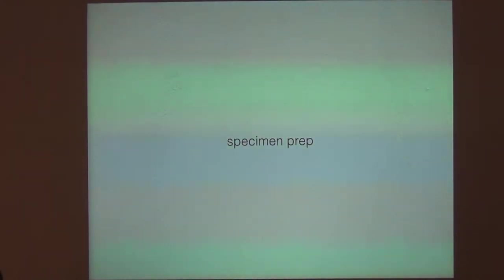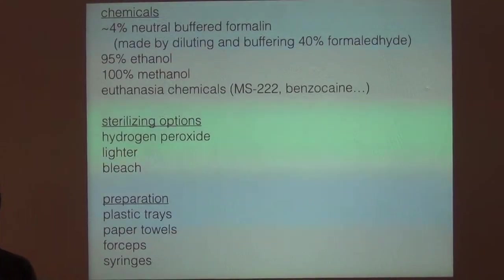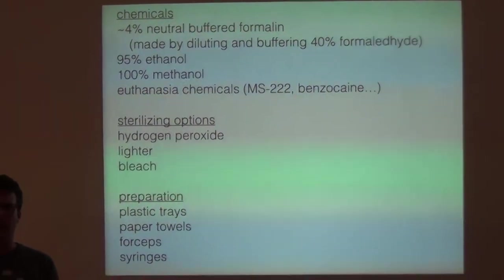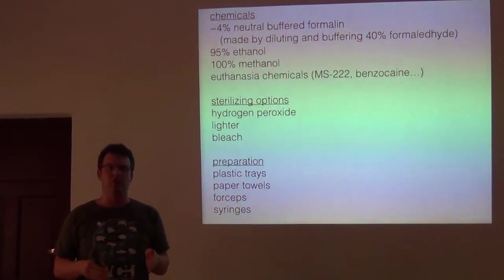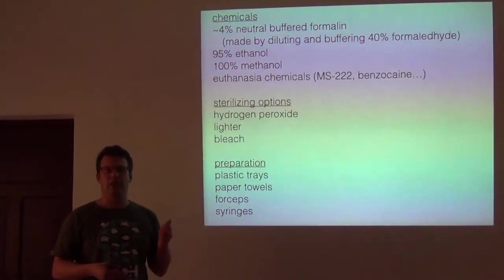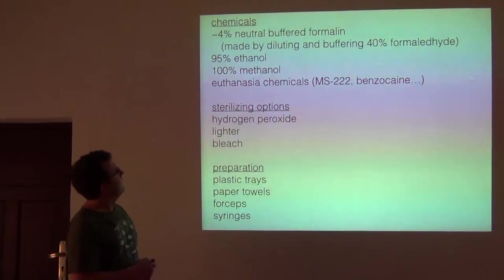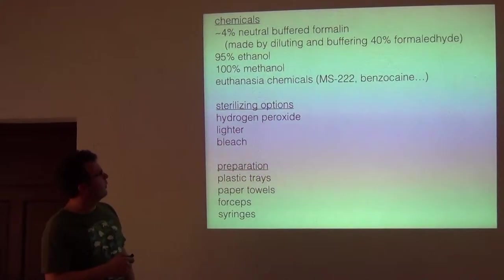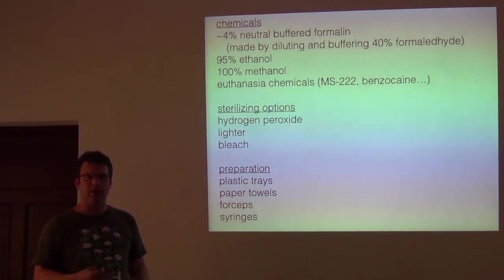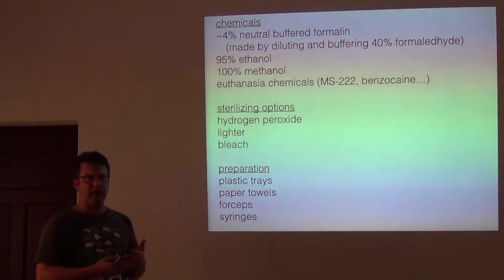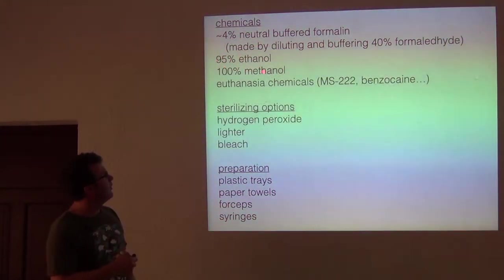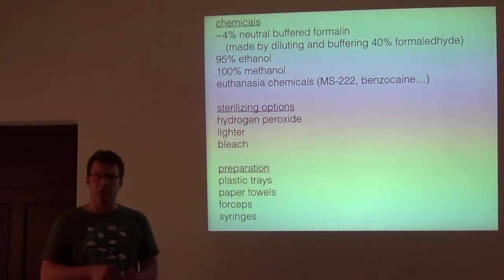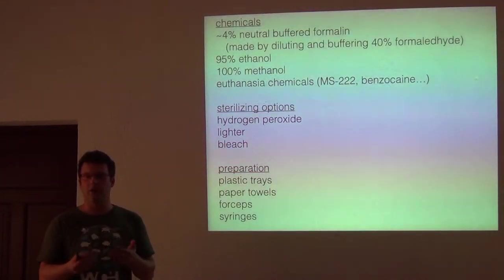I'm going to switch gears and talk a little bit about specimen prep. Before we go into the field, one of the most important things is to make sure we have what we need — we're not going to be able to get it at the nearest village. For herpetology and also for ornithology, we depend a lot on formalin and formaldehyde for preserving animals. We also use ethanol for preserving tissue samples and methanol for preserving blood samples and doing other types of tissue preps.